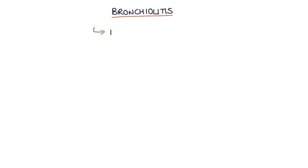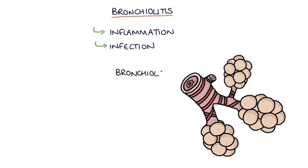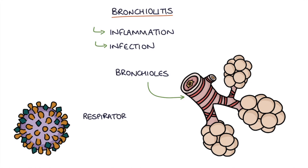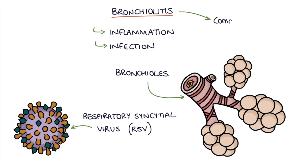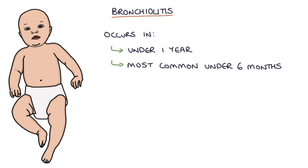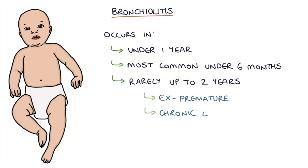Bronchiolitis describes inflammation and infection in the bronchioles, which are the small airways in the lungs. This is usually caused by a virus, and respiratory syncytial virus or RSV is the most common cause. Bronchiolitis is very common in winter and is generally considered to occur in infants under one year of age, most commonly under six months. It can rarely be diagnosed in children up to two years of age, particularly in ex-premature babies who have chronic lung disease.